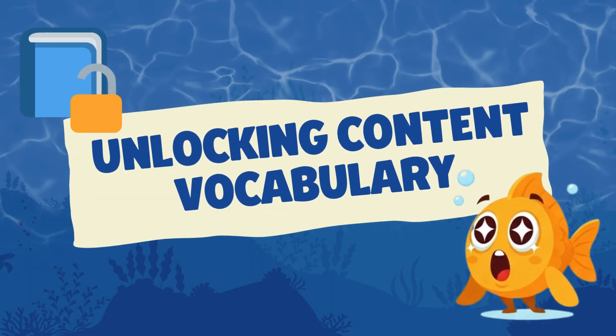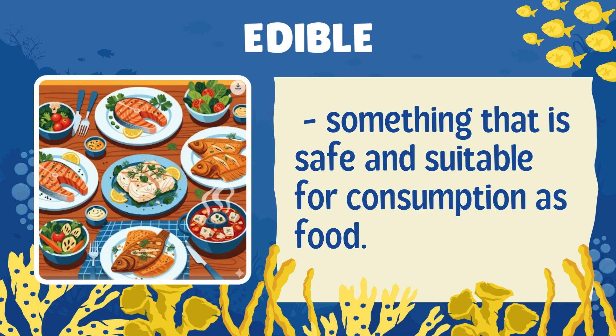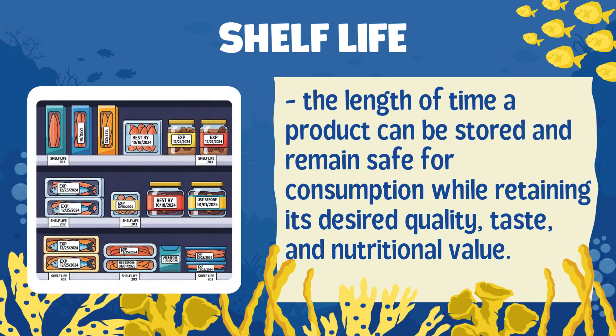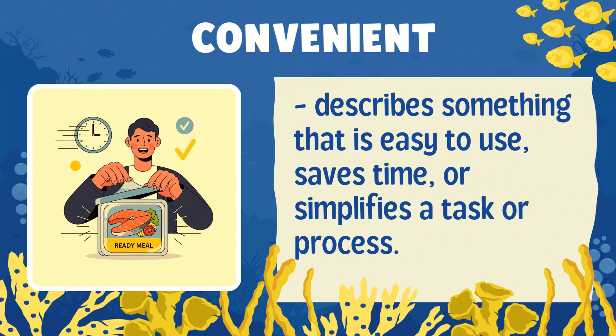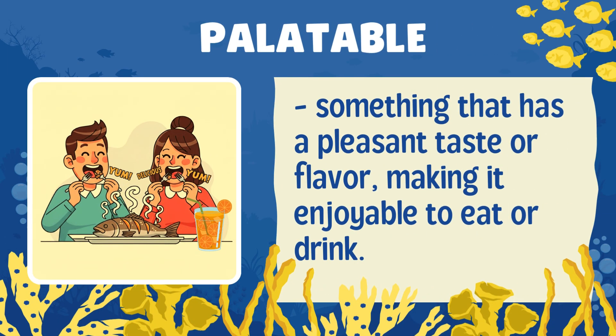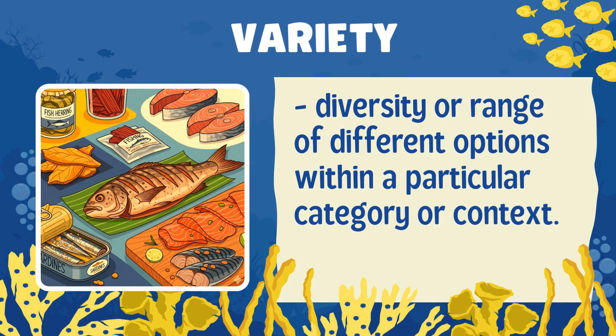Unlocking Content Vocabulary. Edible: something that is safe and suitable for consumption as food. Shelf life: the length of time a product can be stored and remain safe for consumption while retaining its desired quality, taste, and nutritional value. Convenient: describes something that is easy to use, saves time, or simplifies a task or process. Palatable: something that has a pleasant taste or flavor, making it enjoyable to eat or drink. Variety: diversity or range of different options within a particular category or context.